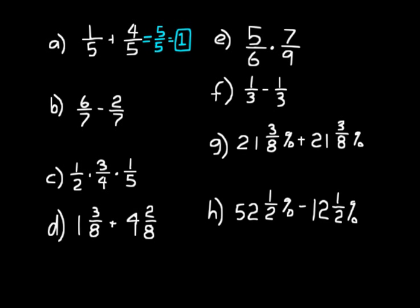Think about it with fraction circles: if you shade in five-fifths of a circle, you've shaded the entire circle — one whole. On B, subtract the numerators: six minus two is four. You have a common denominator there, so four-sevenths is the answer.